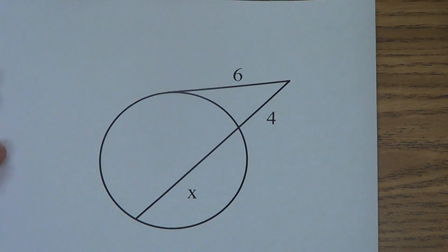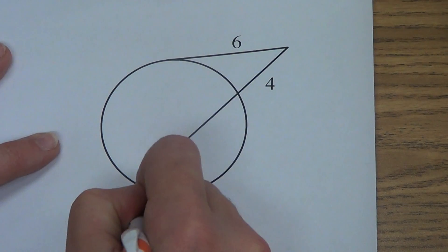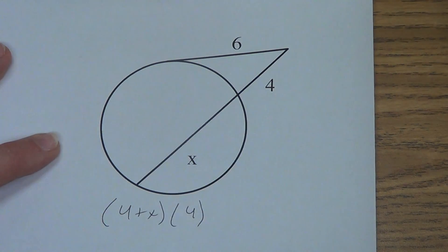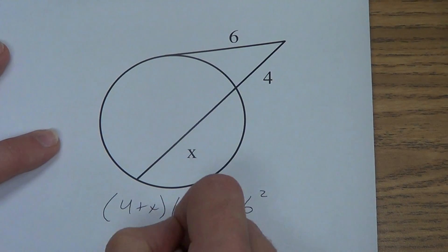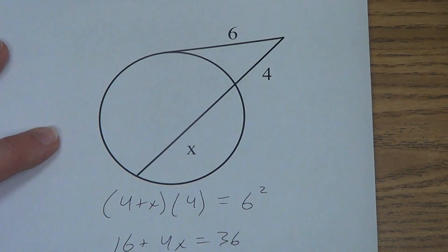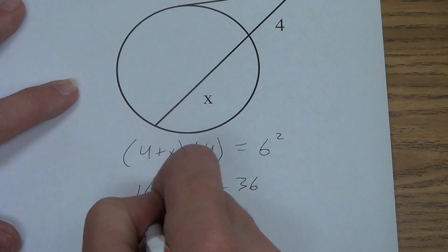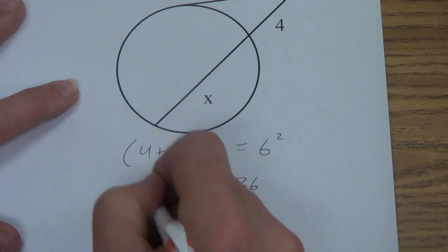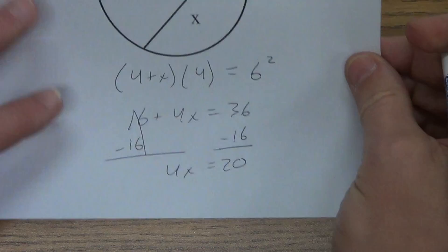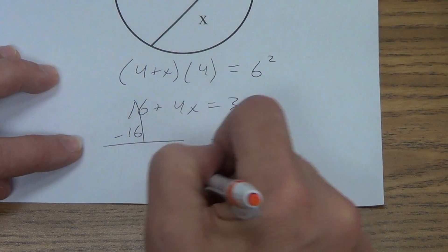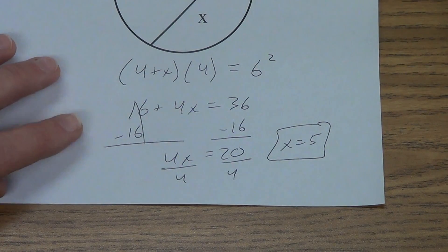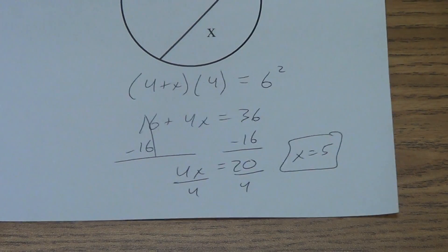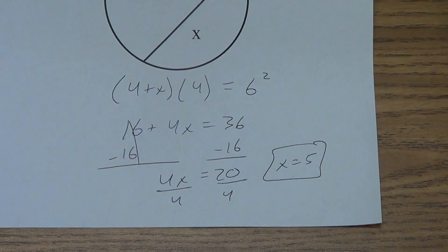Another one. Whole thing, 4 plus X. External part, 4. Equals 6 squared. 16 plus 4X equals 36. Subtract that 16. 4X equals 20. Divide both sides by 4. X equals 5. Go ahead and put units on those on a quiz or on a test.